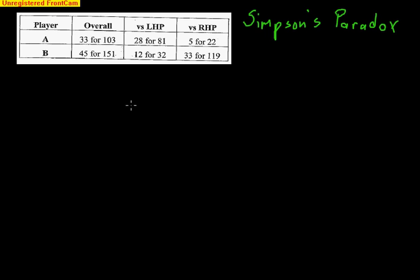Let's say it's the bottom of the ninth and you need a pinch hitter to get a key hit to win the game, and you're choosing between two players — Player A and Player B. You've got to make the decision as to which player you're going to put in to get that key hit. Let's look at their overall numbers.